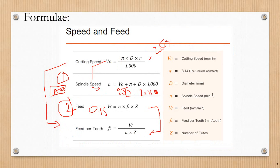So feed rate, here we have 0.15 divided by N, which is the spindle speed, into Z, which is the number of flutes. Number of flutes can be 4, 2, 6, or 8. We need to check the cutting tool to determine the number of flutes for our calculation.